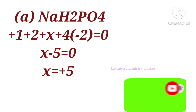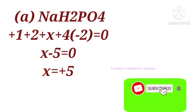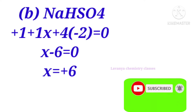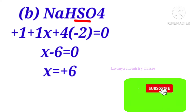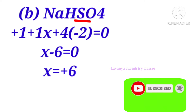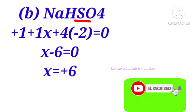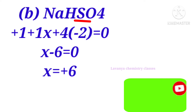The next problem is NaHSO₄. We have to find out the oxidation number of the sulfur atom. Let sulfur be x. So: (+1) + (+1) + x + 4×(−2) = 0. Solving, the oxidation state of sulfur is +6.